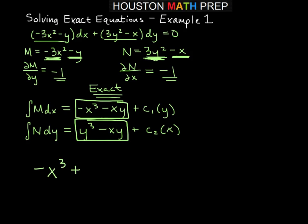We can write down plus y cubed, and then they both have a minus xy. We only need to include that once, not multiple times. Equal to some constant.